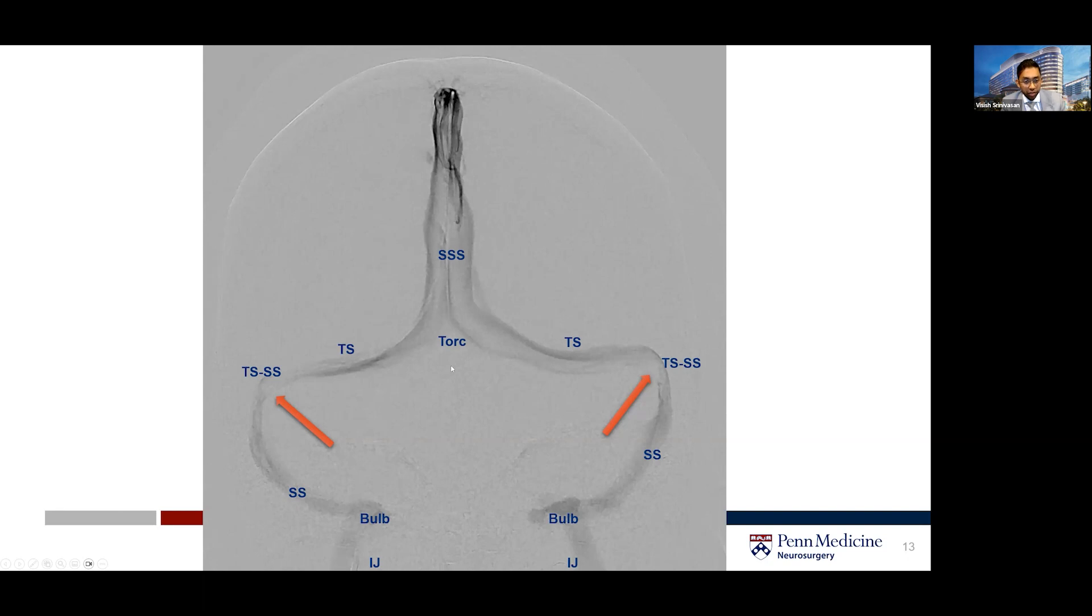You can see flow coming down the superior sagittal sinus across the torcula to the transverse sinus across the transverse sigmoid junction, where in this particular case we're seeing bilateral stenoses down to the sigmoid sinus, the jugular bulb, and the internal jugular vein.